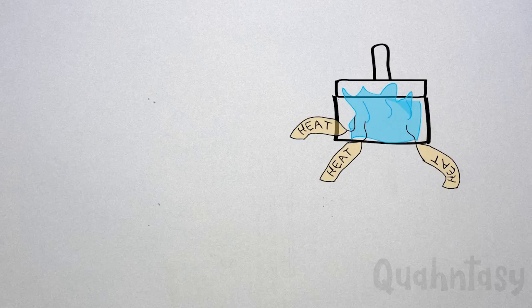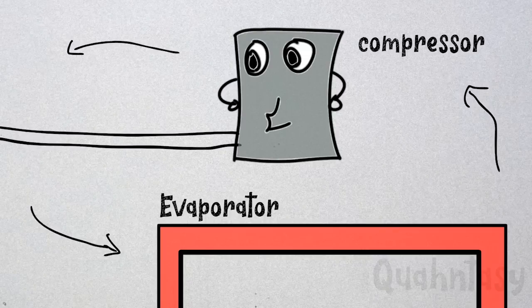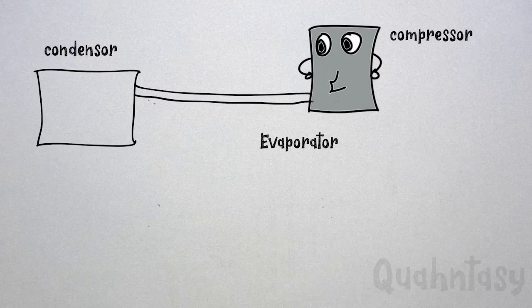So in between this evaporator and condenser we place a compressor. Not only does it compress the coolant, it also circulates the current in the system under pressure. We can do better.